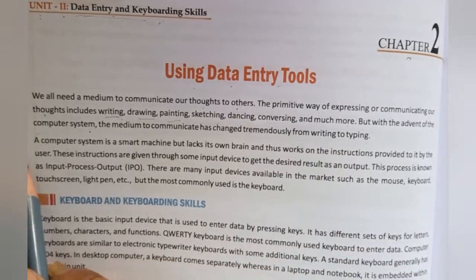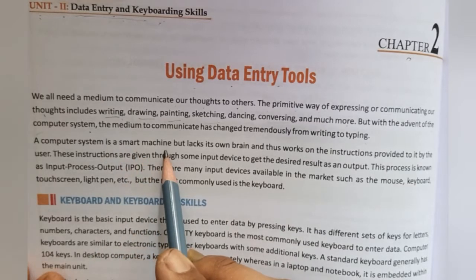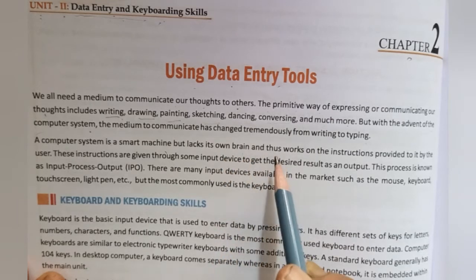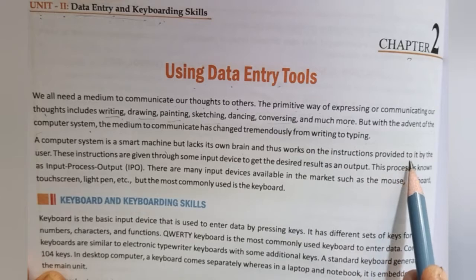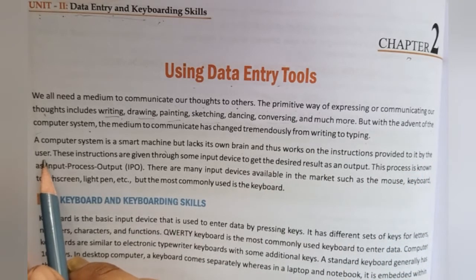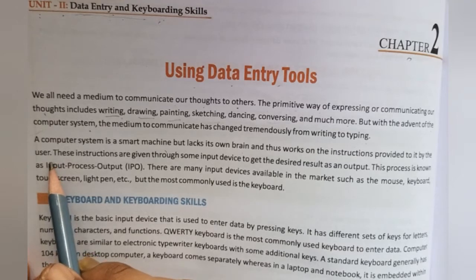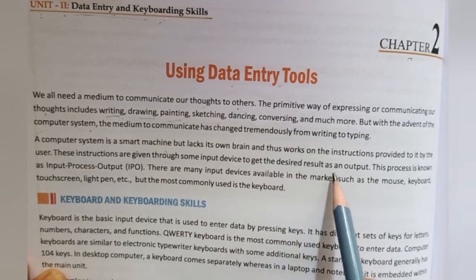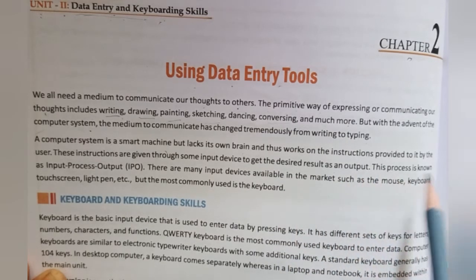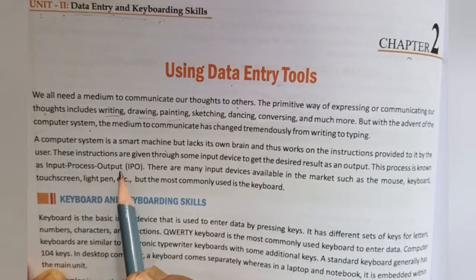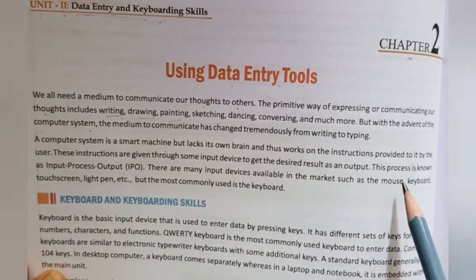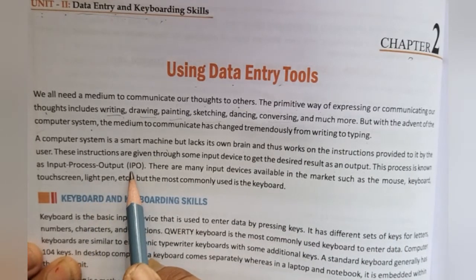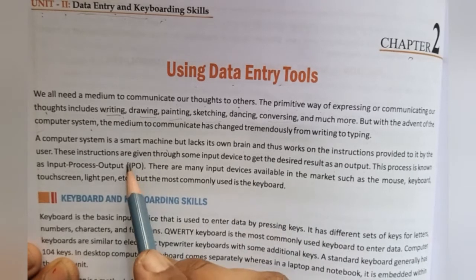A computer system is a smart machine but lacks its own brain, and thus works on the instructions provided to it by the user. These instructions are given through some input devices to get the desired result as output. This process is known as Input-Process-Output, or IPO.